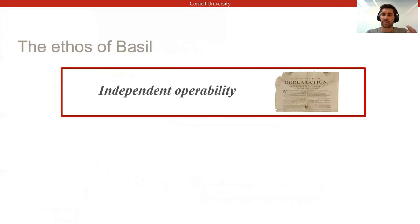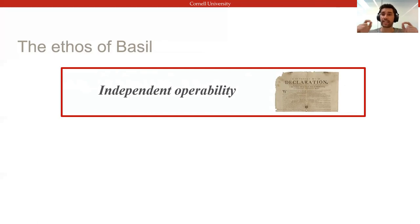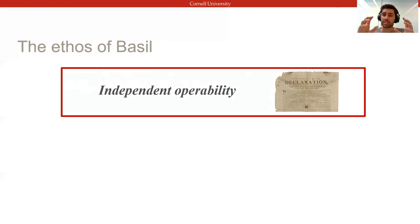The key to efficiently realizing both correctness and progress is the core ethos we've built Basel around, which we call independent operability. It states that all operations that can be independent should also be processed independently.